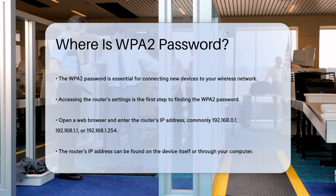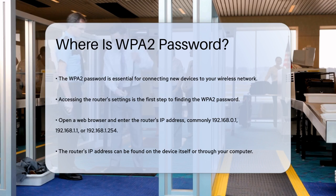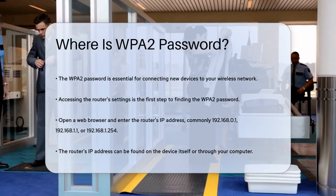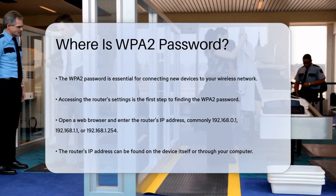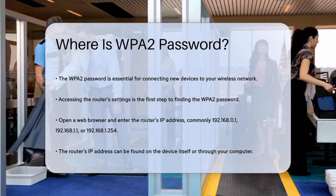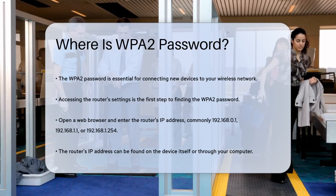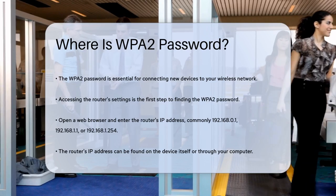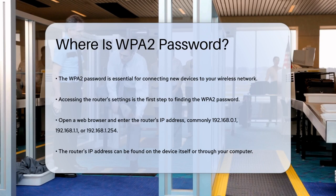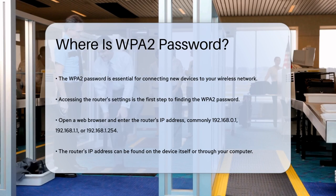First, you need to access your router settings. This is usually done by opening a web browser on your computer and typing in the IP address of your router. Common IP addresses include 192.168.1.1 or 192.168.1.254. You can find this IP address on the side or bottom of your router, or by looking it up on your computer.